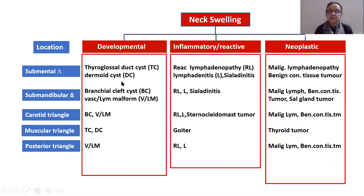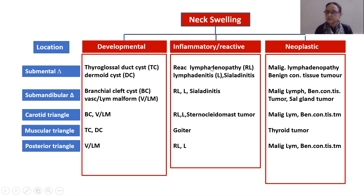The developmental swellings are thyroglossal duct cyst, dermoid cyst, branchial cyst, and vascular lymphatic malformations. These occur in different triangles of the neck — thyroglossal and dermoid are in the submental triangle. Inflammatory swellings like reactive lymphadenopathy, lymphadenitis, and sialadenitis are also in the submental triangle.